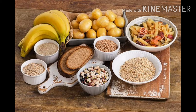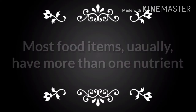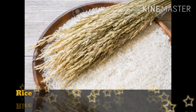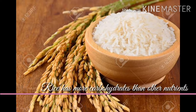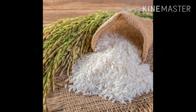In food items, one particular nutrient may be present in a much larger quantity than others. For example, rice has more carbohydrates than other nutrients. This means rice contains more carbohydrates compared to other nutrients, so we say that rice is a carbohydrate-rich source of food.